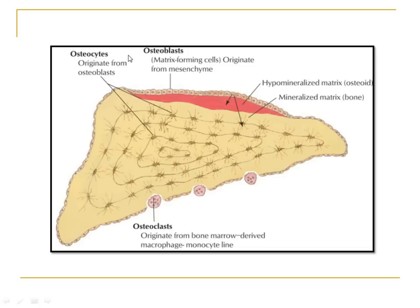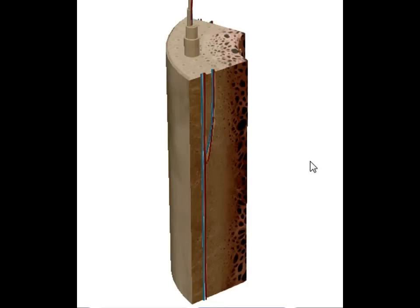So there are different types of cells present in bone: osteoblasts, osteocytes, and osteoclasts. Another type of cell that should also be mentioned is the osteogenic cell, which is present in the periosteum. Now we will look at the three-dimensional structure of what we studied.